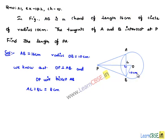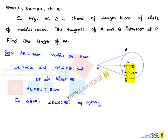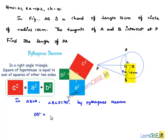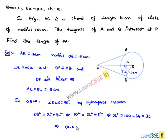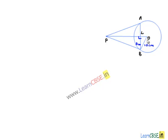Now consider triangle BLO, where angle BLO is equal to 90 degrees. By Pythagoras theorem, OB² equals OL² plus BL², which gives 10² equals OL² plus 8². Therefore OL² equals 100 minus 64, which equals 36. So OL equals the square root of 36, that is 6 centimeters.